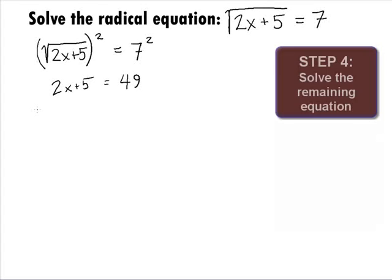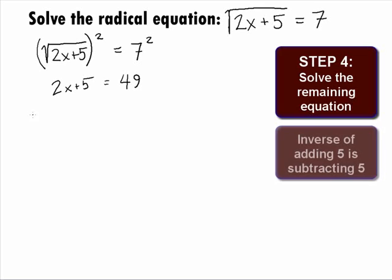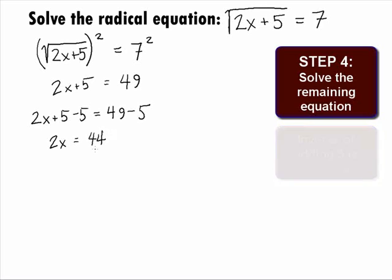In Step 4, we want to solve the remaining equation. The equation that we ended up with is a linear equation. So from here, we want to get x by itself on one side and everything else on the other side by using inverse operations. The inverse of add 5 is to subtract 5 from both sides. When we do this, we will get 2x plus 5 minus 5 equals 49 minus 5. When we simplify this, we get 2x on the left side equals, and 49 minus 5 gives us 44 on the right side.